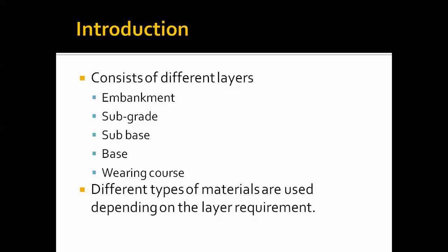The wearing course is the riding surface — the top layer on which vehicles travel. It should provide a smooth surface for safe and easy commuting. Binding materials are used here: bitumen or tar for flexible pavements, and cement concrete for rigid pavements. Depending on the requirement, different materials are used for each pavement layer.